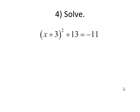A similar idea here: we have one squared term, a constant term, and another constant term. There's no term containing the single variable x, the linear term, we would say. So we want to solve this by extracting roots. I'm going to subtract 13 from both sides. x plus 3 squared equals negative 24.